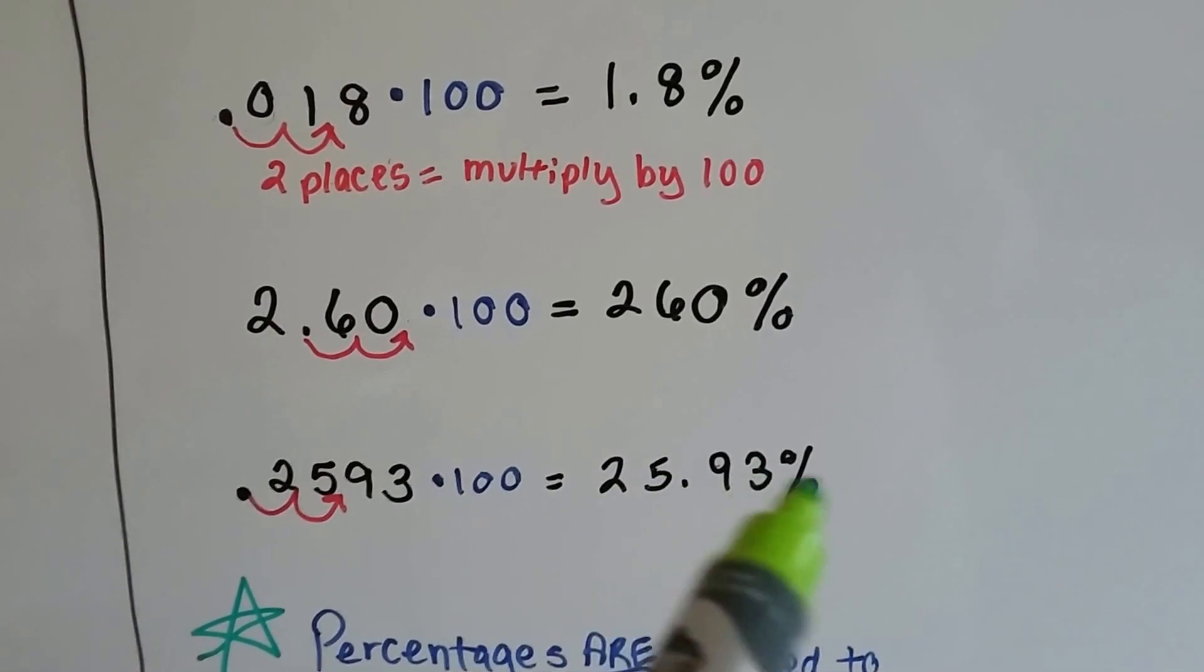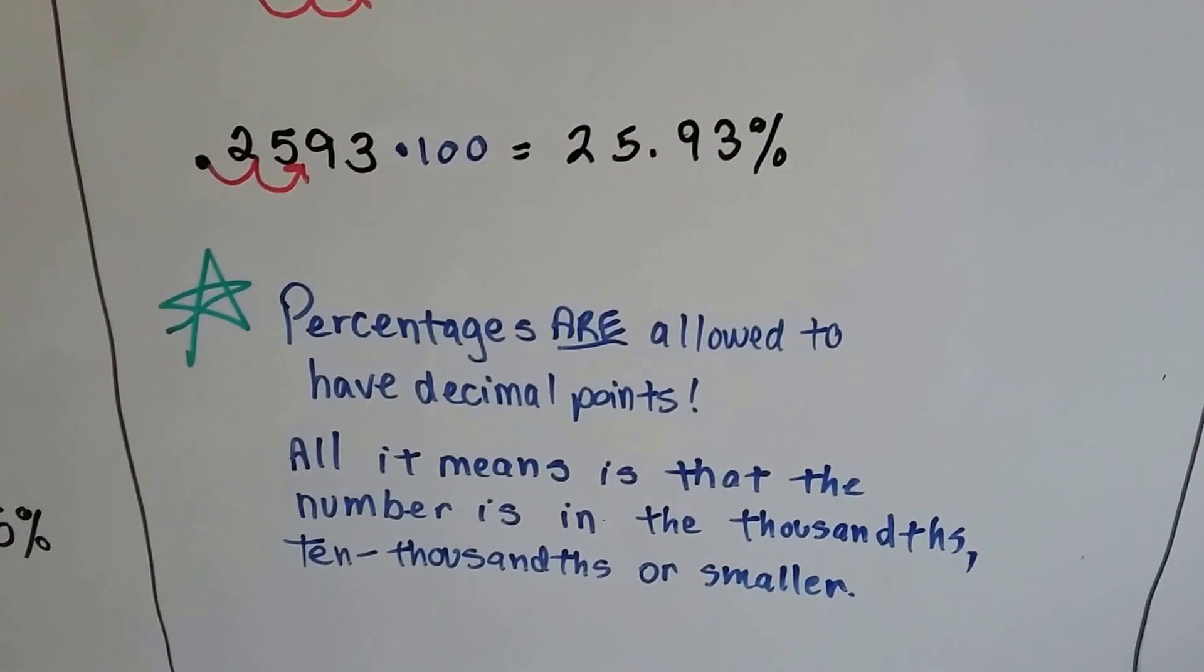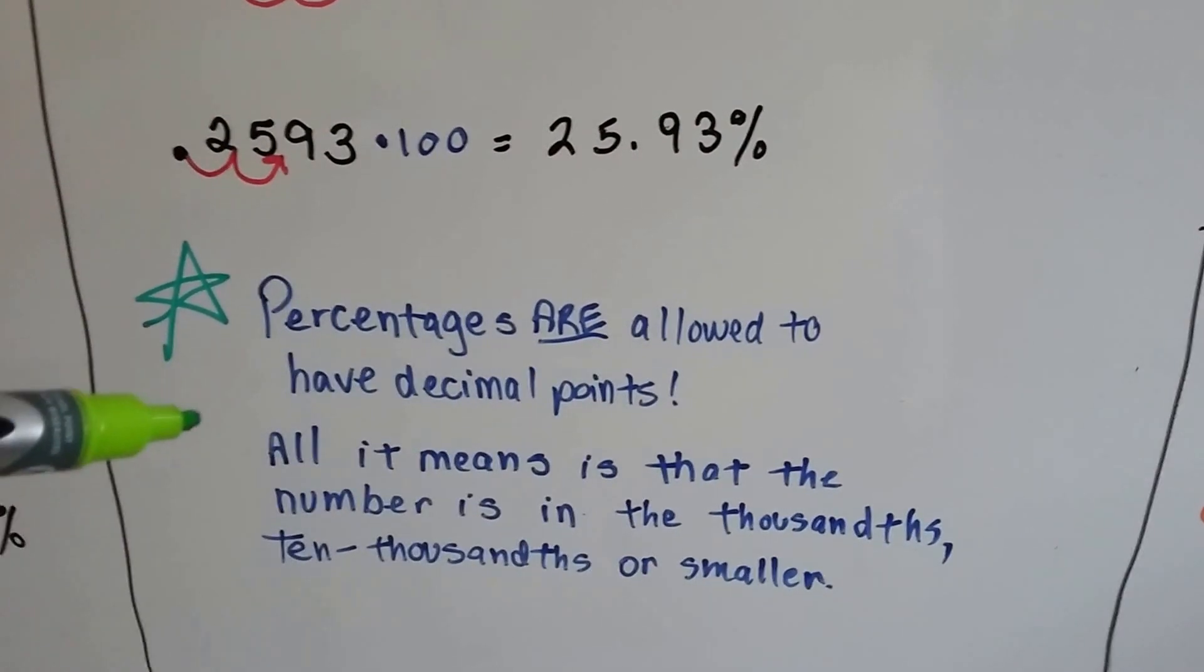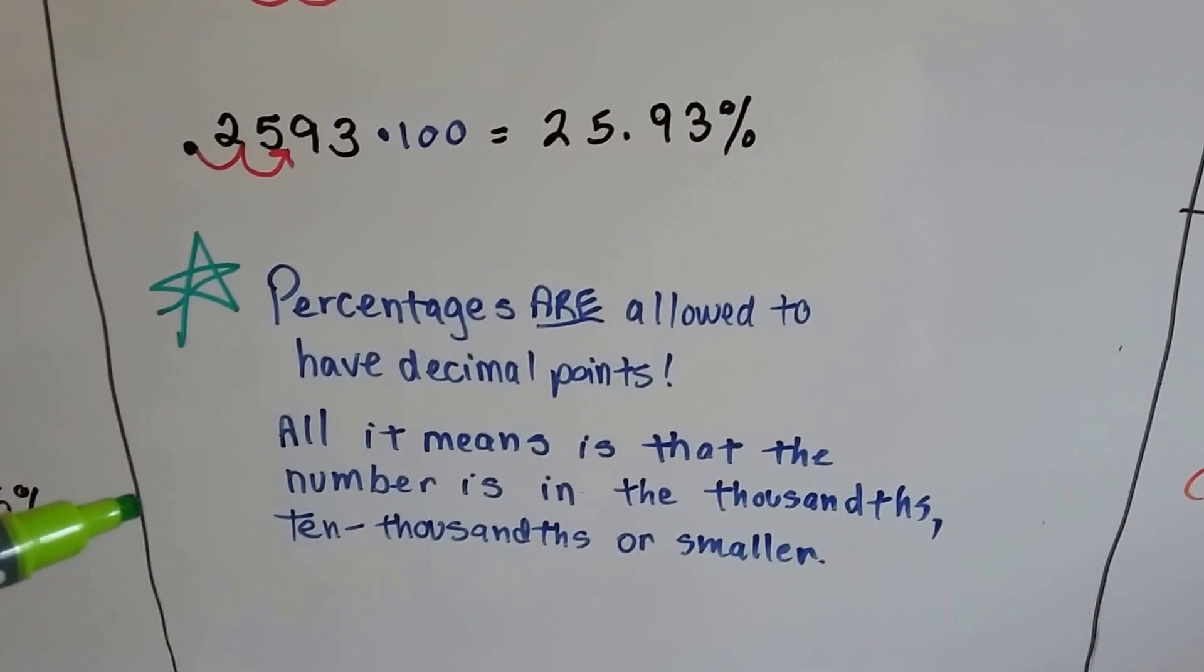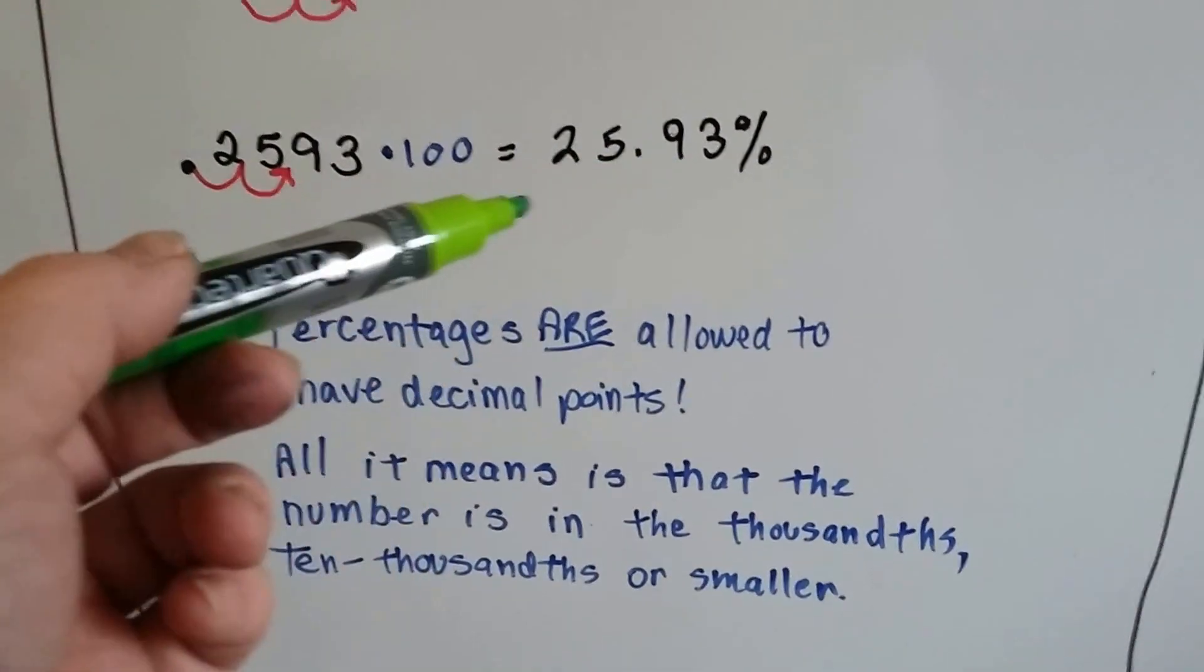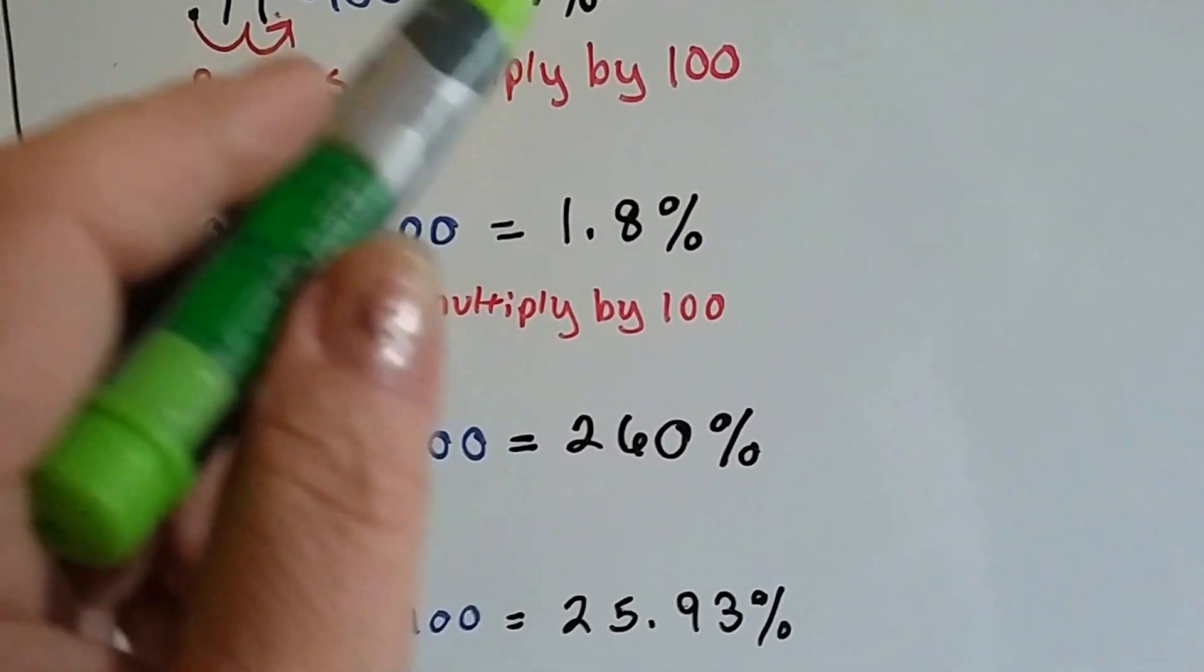And we have 25.93%. Now what does that mean, 25.93%? Well, percentages are allowed to have decimal points. All it means is that the number is in the thousandths and ten-thousandths or smaller and not in the hundredths. A normal decimal is in hundredths. This is 71 of a hundred.